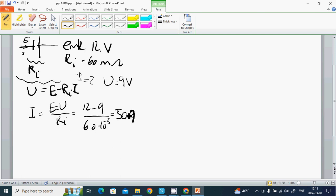What is the Pmax? For this we have U times I, which is 9 multiplied by 50, it is 450 watts.